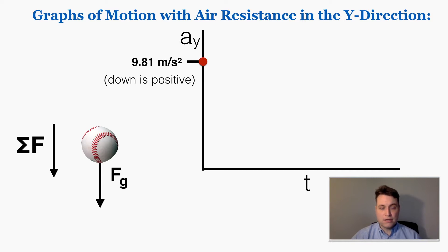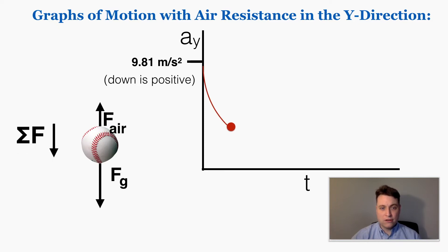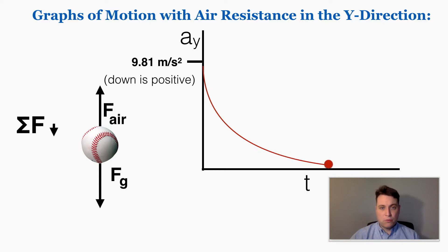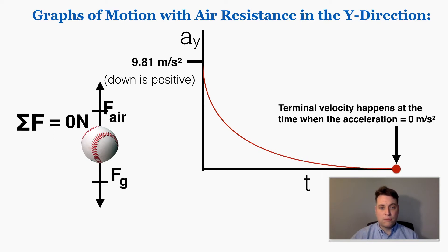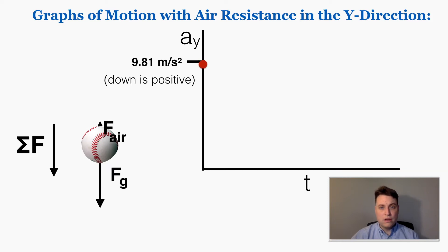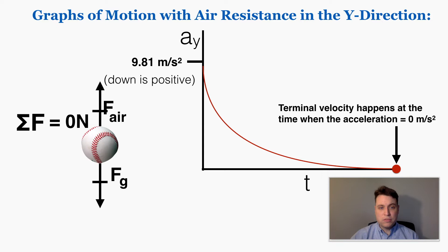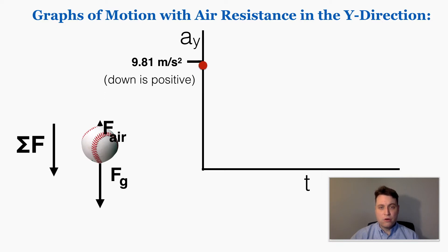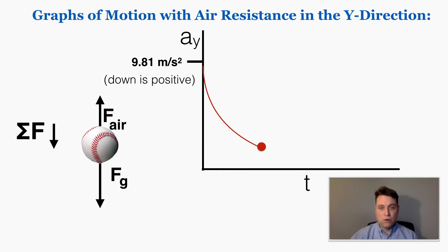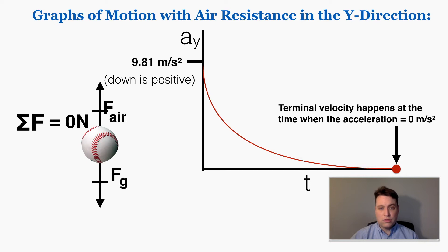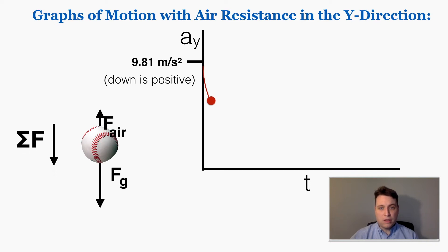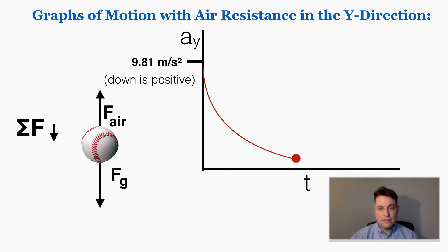As it falls, it picks up velocity very quickly because it has a large downward acceleration. As it picks up velocity, it also picks up air resistance very quickly. But as it gets more and more air resistance, it has less and less total net force, because the air resistance is working against gravity. Less net force means less acceleration downward, which means it takes longer to gain more velocity and thus longer to gain more air resistance. So the acceleration graph curves downward — it starts off easy to gain air resistance, then becomes harder and harder.